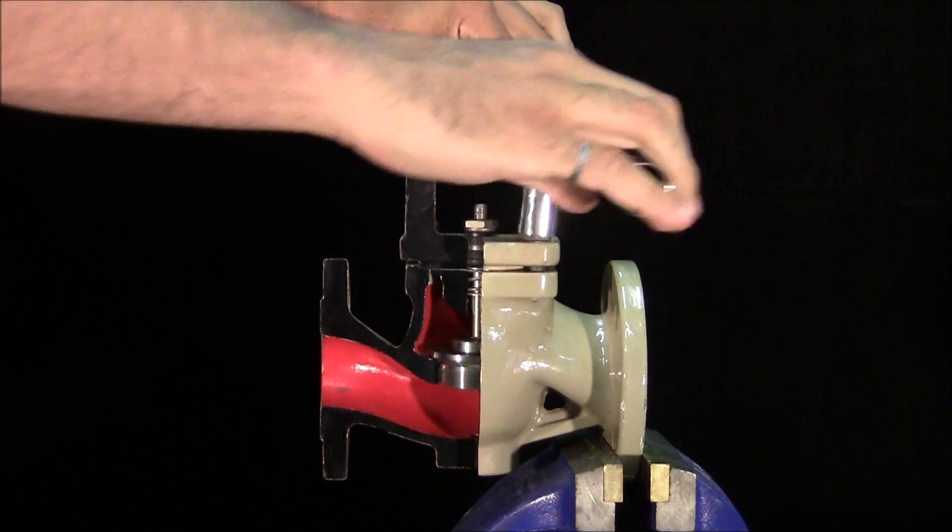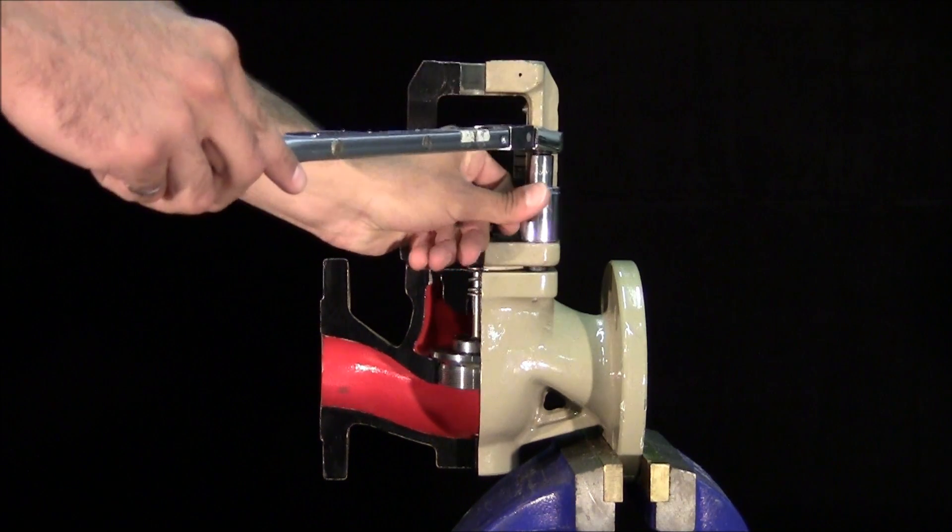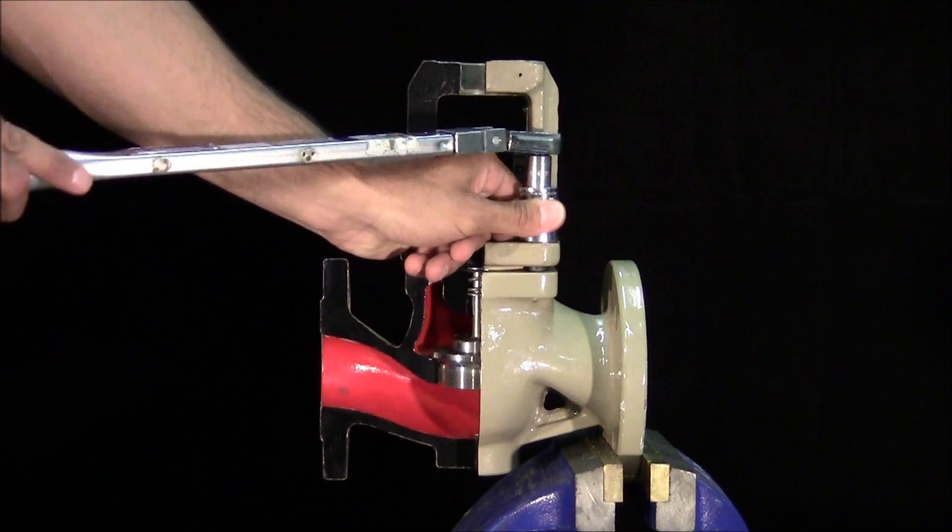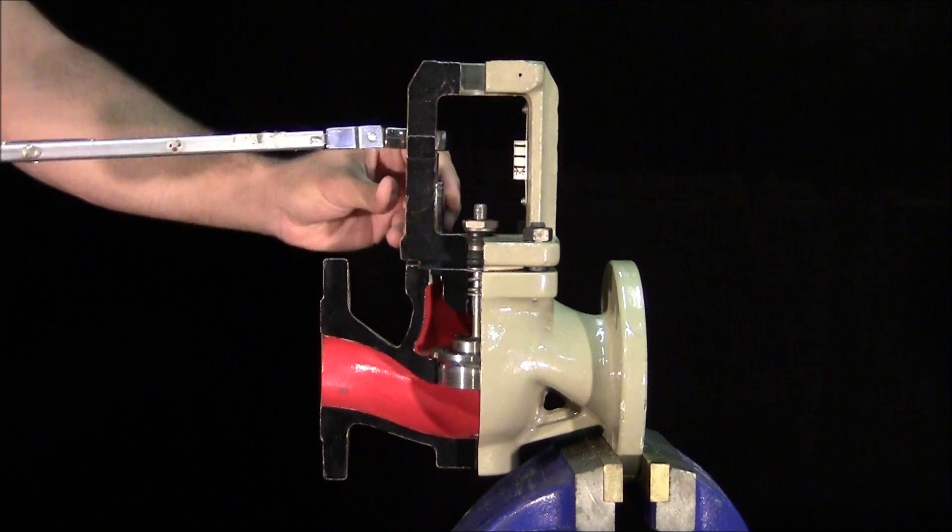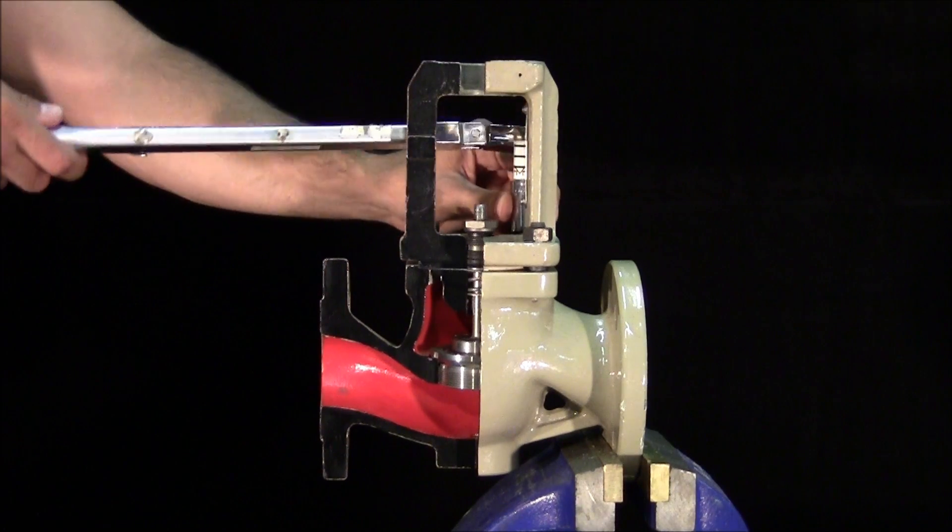A torque wrench will be used to tighten the nuts. In a criss-cross fashion, tighten to 50% of the torque value and then again to 100%.